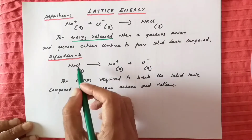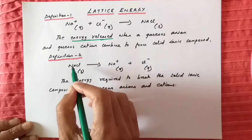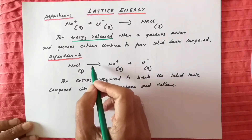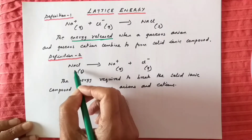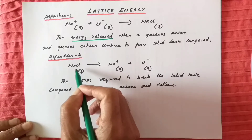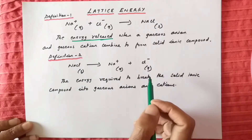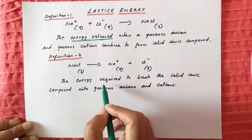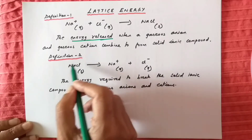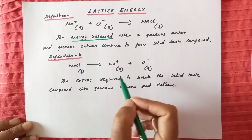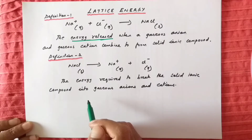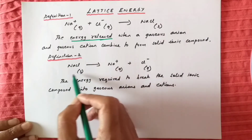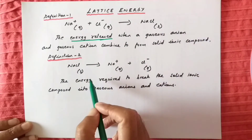The second definition: to break solid NaCl into its gaseous anions and cations, we require energy. If you apply energy to the solid NaCl, the ionic compound will be converted to the individual ions — cations and anions. In this case, energy is required. So the second definition is the energy required to break the solid ionic compound into its ions. One way it is formation of the ionic compound; in the second case it is breakdown. Here energy is released, and here energy is required.